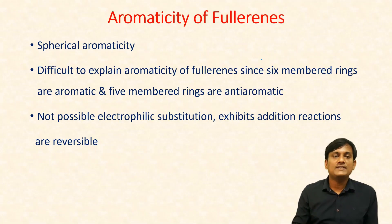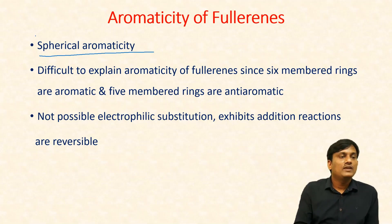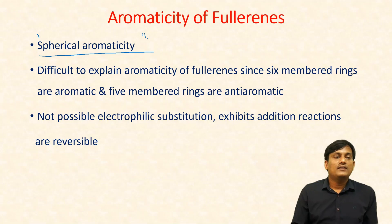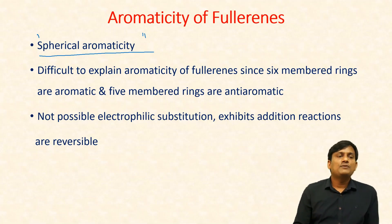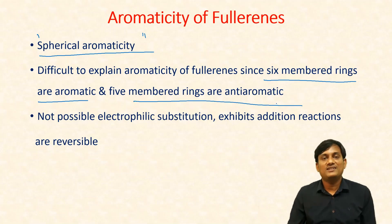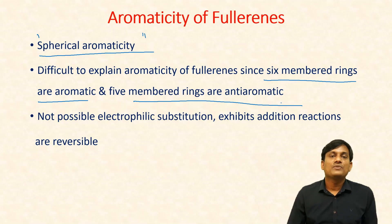Regarding the aromaticity of fullerenes, they exhibit spherical aromaticity. There is a delocalization of pi electrons in a spherical manner, which is why the aromaticity of fullerenes is called spherical aromaticity. It's very difficult to explain, since six-membered rings are aromatic and five-membered rings are anti-aromatic.